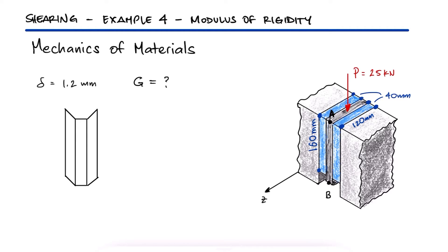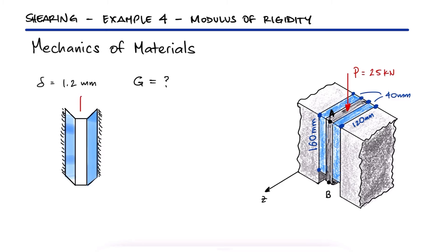Just like in example 3, if we look at this setup from the positive z-axis, we see that the vertical displacement of the plate is related to the shear strain gamma.